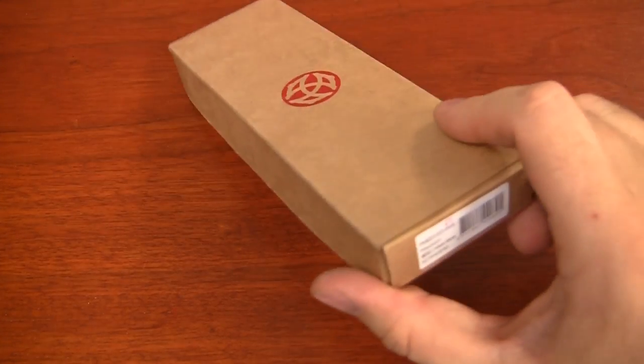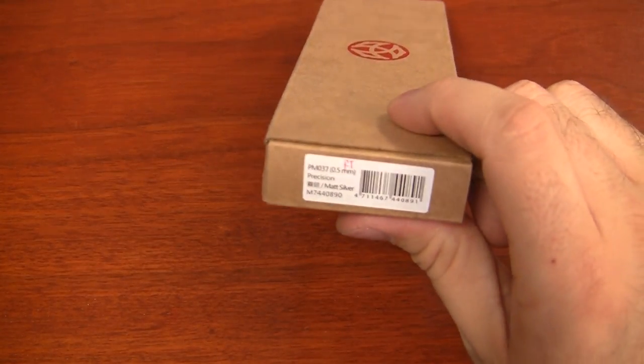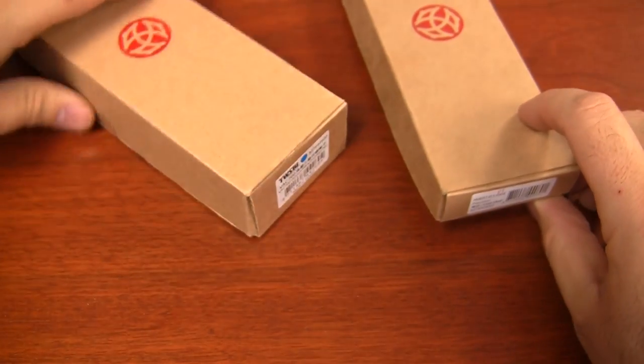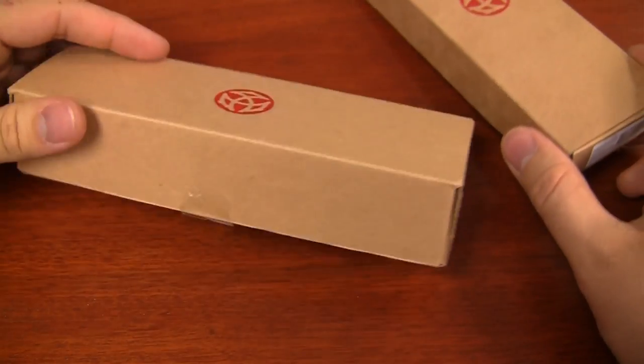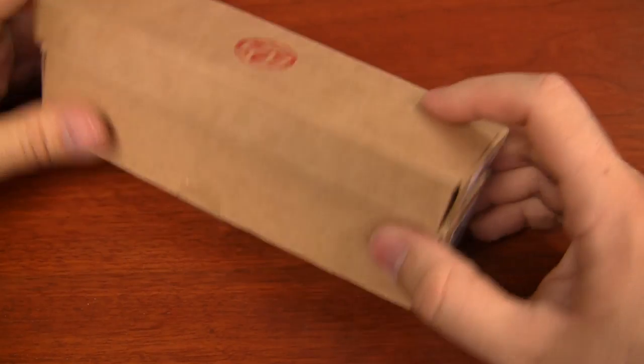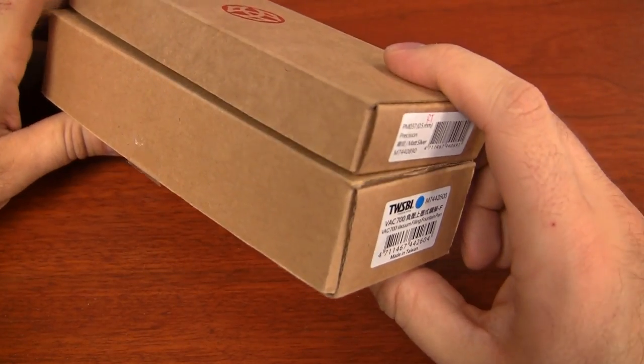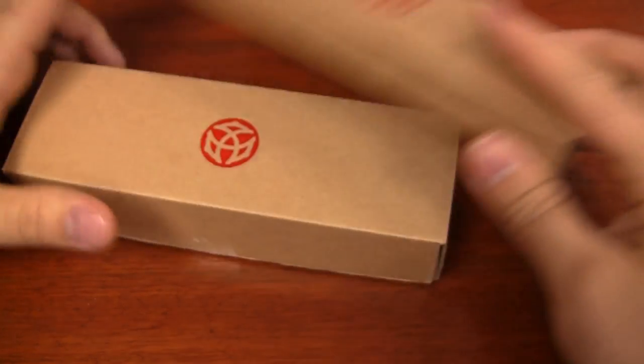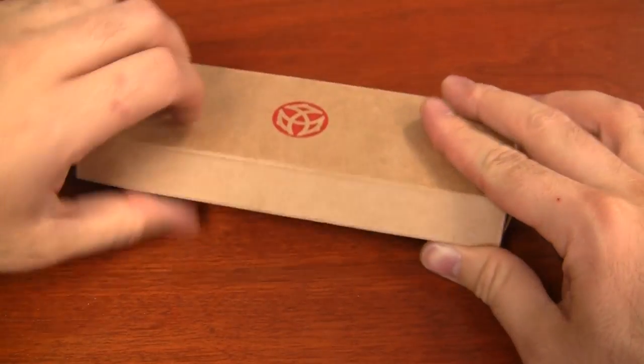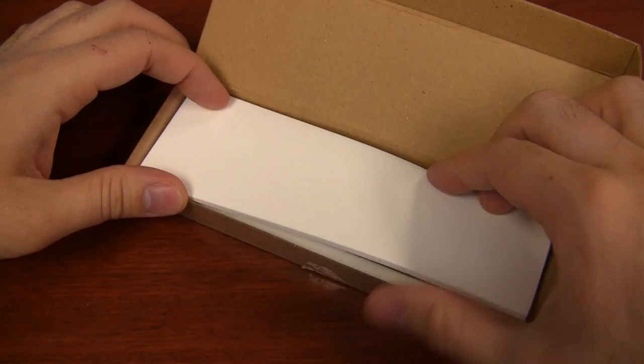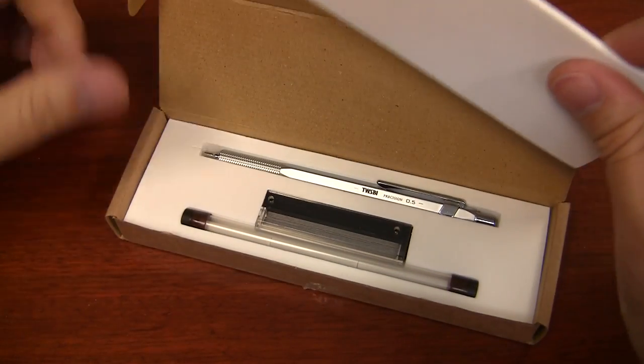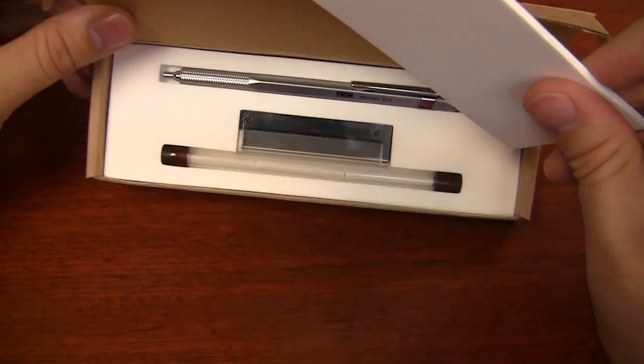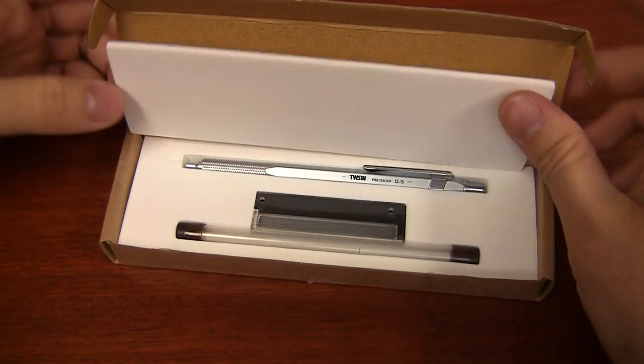This is the box for the TWSBI mechanical pencil. It's a little bit thinner than the pen boxes. Here's a box for the VAC 700, but they're all pretty much the same, except for the pencil. The pencil box is noticeably thinner than the pen box, and part of that is because it doesn't actually have its own case inside. It just is inset in the foam inside the box, which is fine.